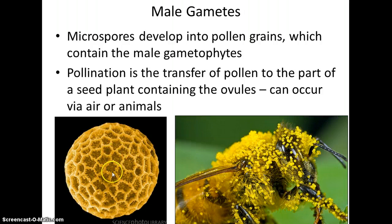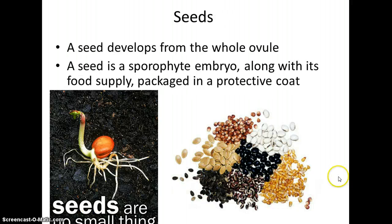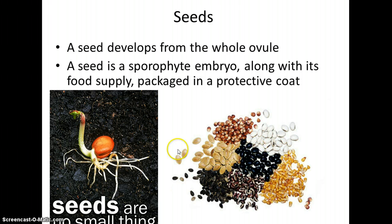Here's a close-up of a pollen grain; they have interesting looks and shapes. Seeds contain the embryo and are dispersed to find an advantageous location to germinate and begin growing. You can see here the root has come out and the shoot is heading up.